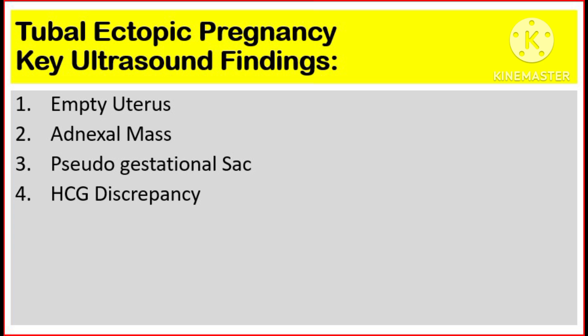Tubal ectopic pregnancy key ultrasound findings: Number one, empty uterus. Number two, adnexal mass. Number three, pseudo-gestational sac. Number four, human chorionic gonadotropin discrepancy.